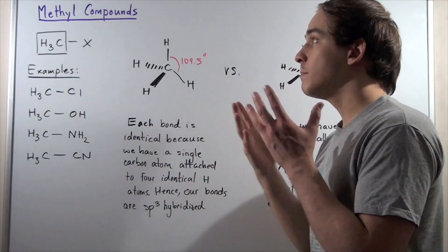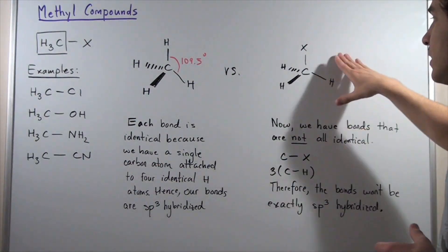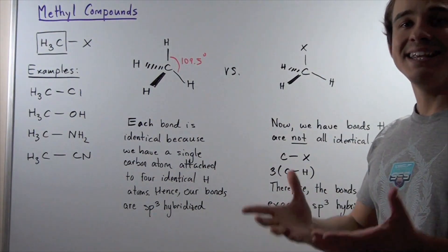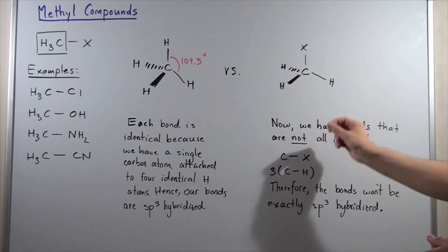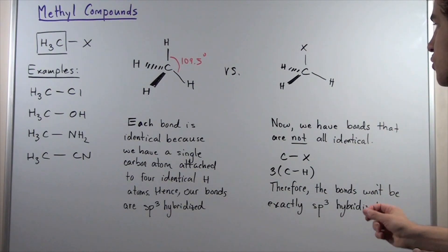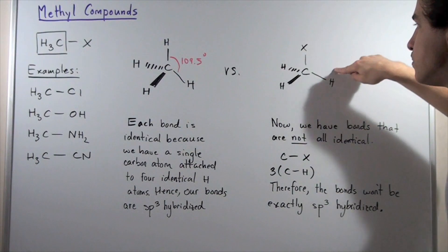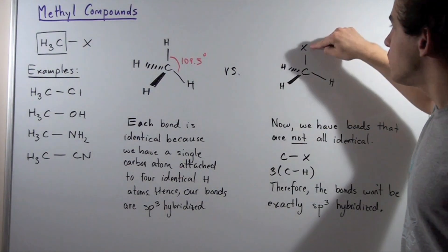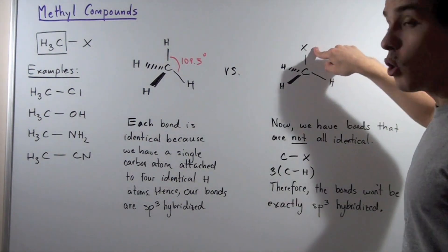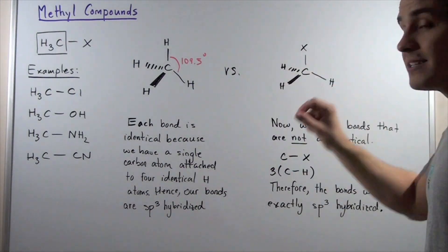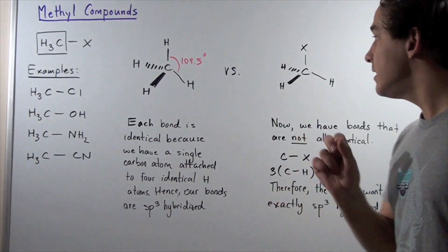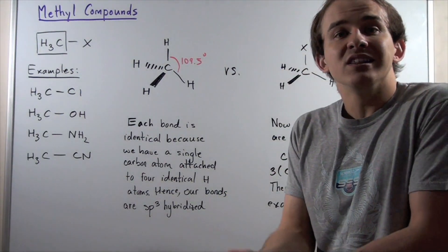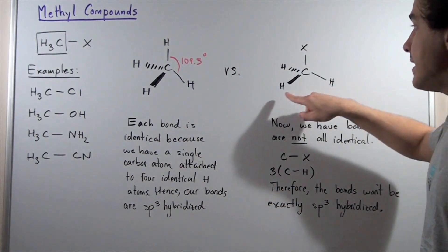Let's take this methane and compare it to a methyl compound. In a methyl compound, we replace one H with an X, where X could be any atom. Now we have bonds that are not all identical — we still have three CH bonds, but now we have a different CX bond. For example, if we replace X with a chloride atom, since chloride is more electronegative than either the carbon or the H atoms, the chloride will pull electrons more strongly than the H atoms.